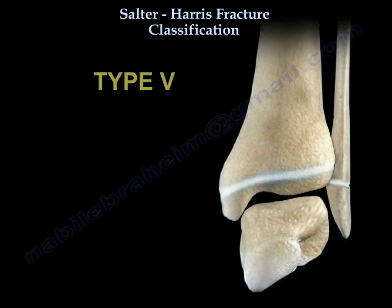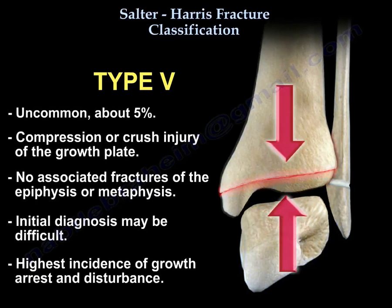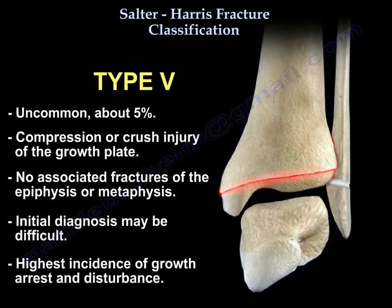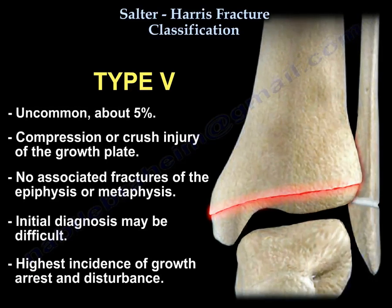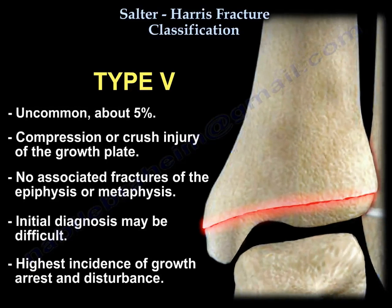Type 5 is uncommon, about 5%. It is a compression or crush injury of the growth plate, with no associated fractures of the epiphysis or the metaphysis. The initial diagnosis may be difficult. It has the highest incidence of growth arrest and disturbance.